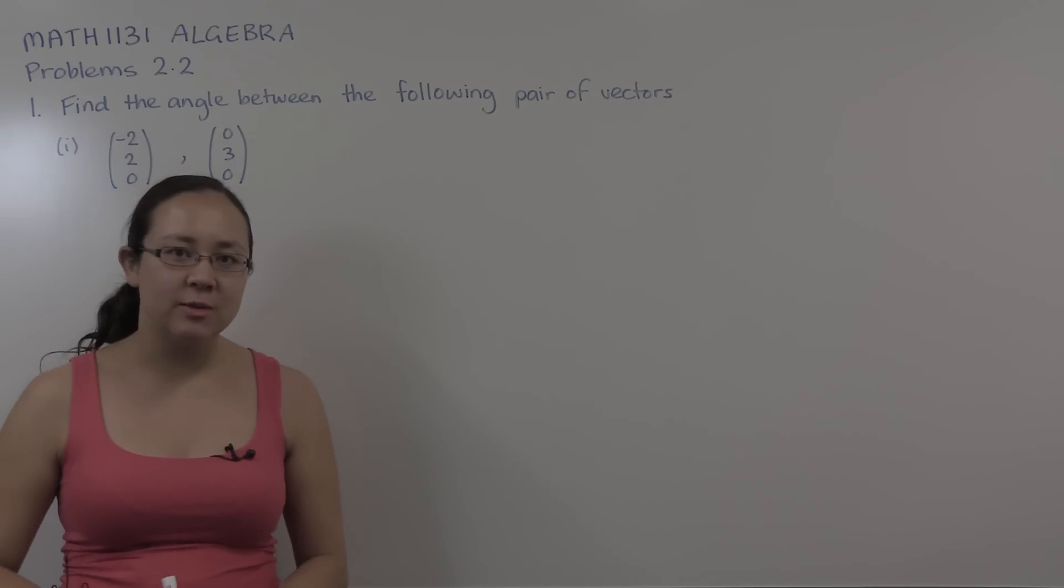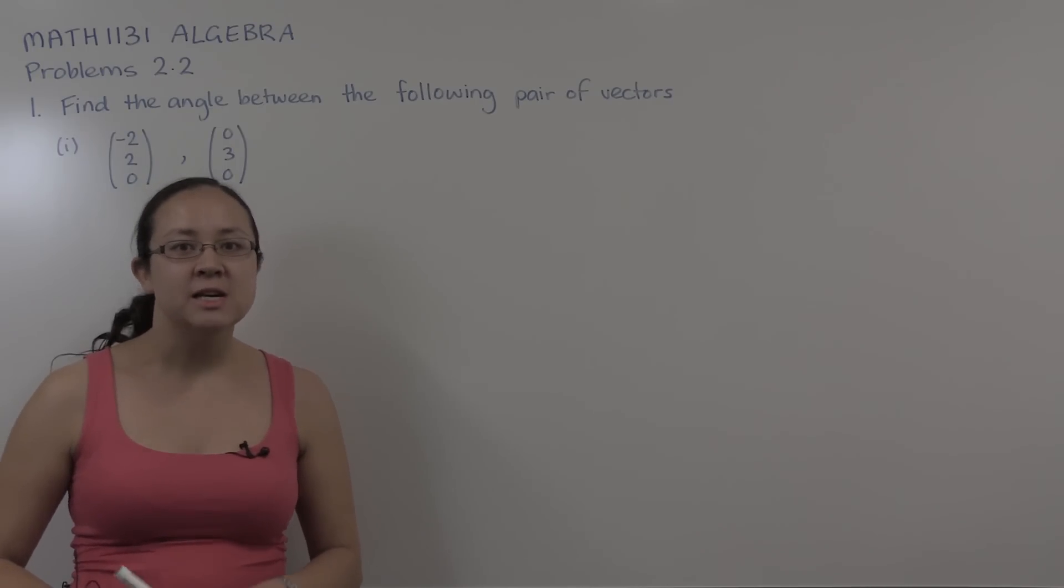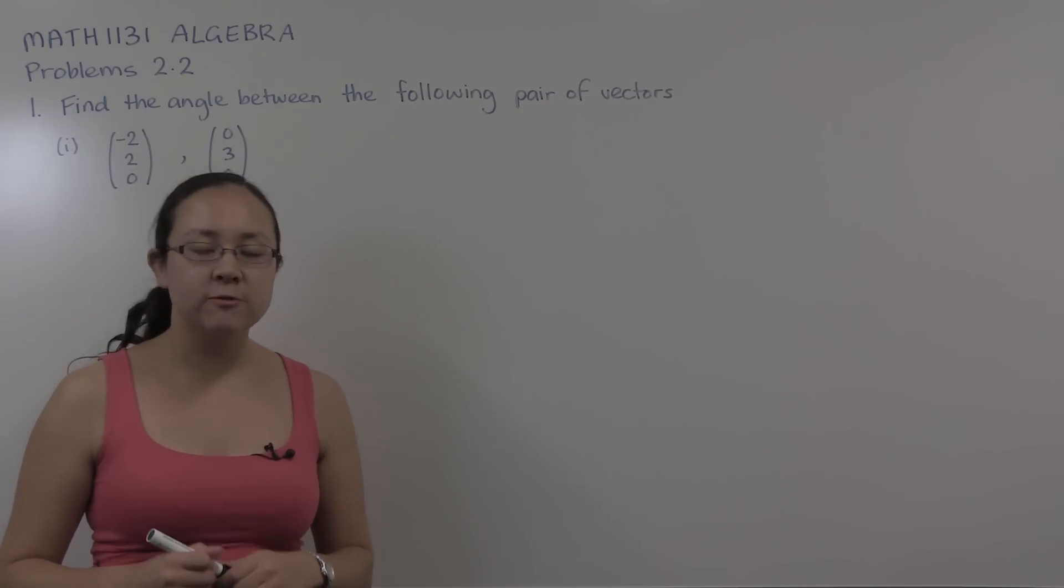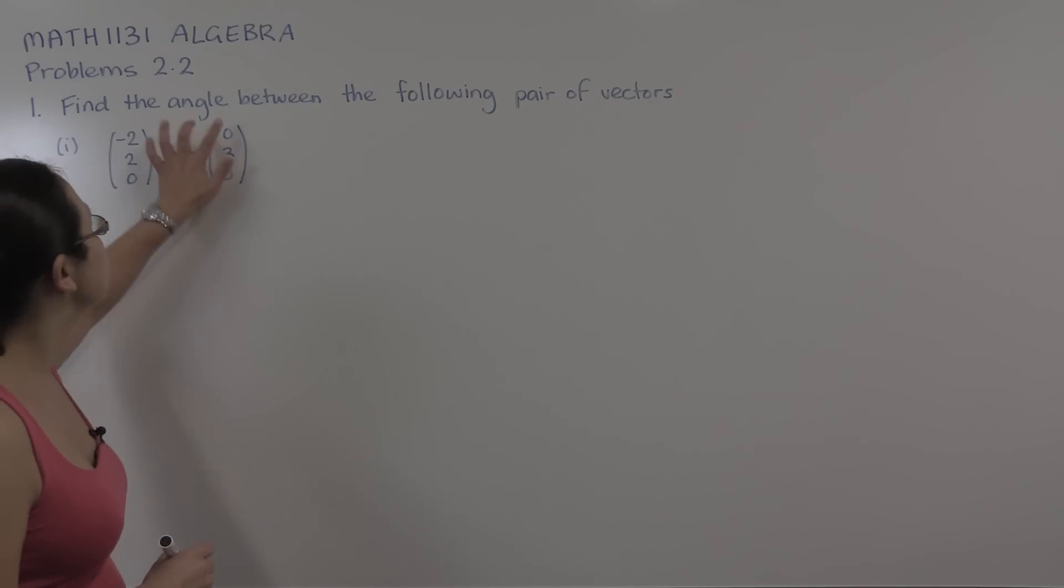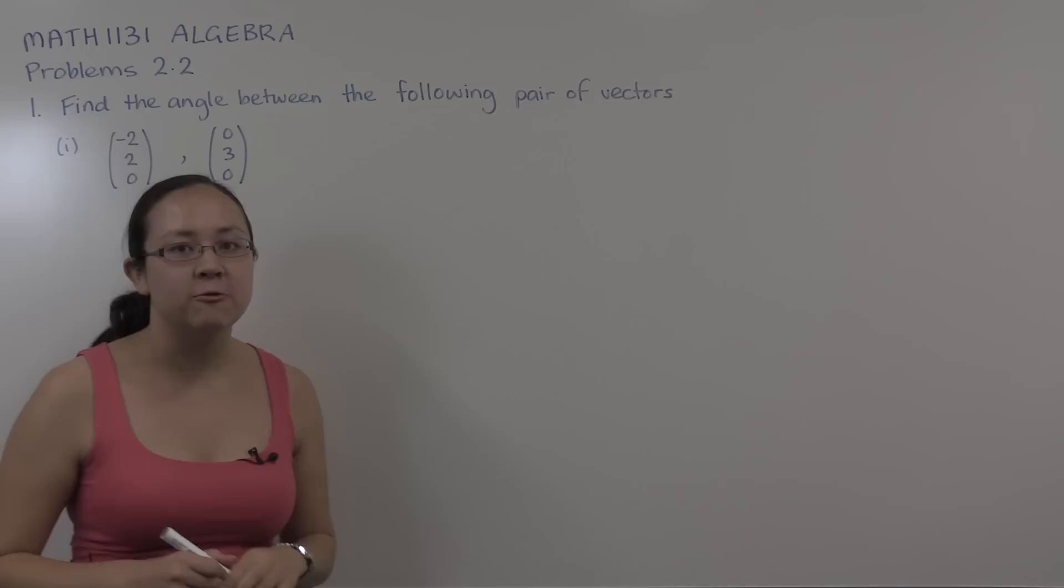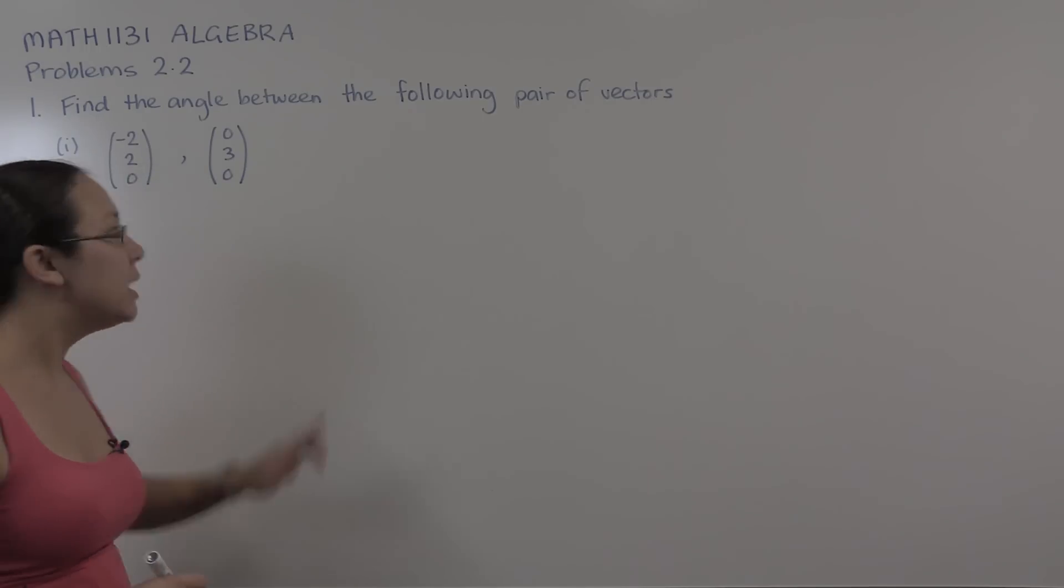Hello, my name is Tanam Shaw and I'm from the University of New South Wales. Today we're going to work on problem 1 from chapter 2 of the Math 1131 Algebra course. This question is asking us to find the angle between a pair of vectors, and I'm just doing part 1, which are these two vectors here.